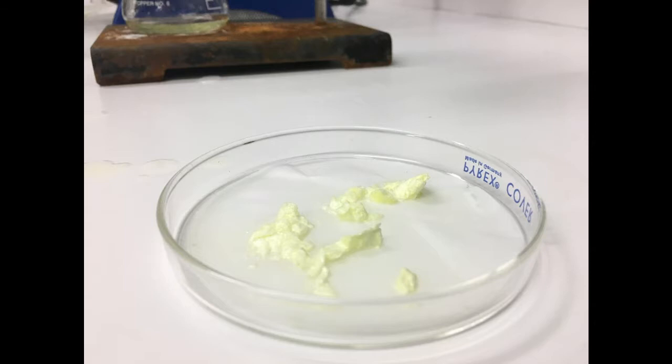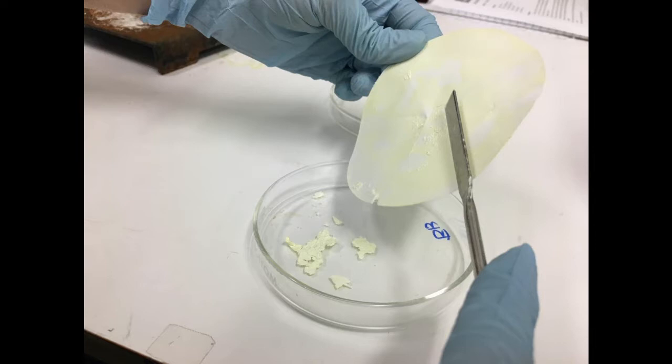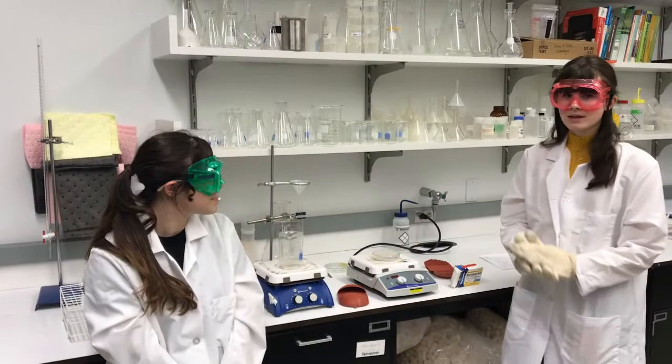Carefully transfer the filter paper into another beaker, or in this case, a petri dish, and you may let it air dry or use an oven. Finally, transfer the dried crystals of the caffeine into a petri dish for sublimation.